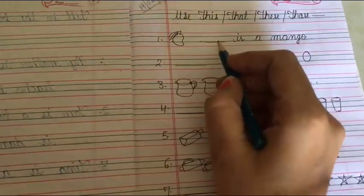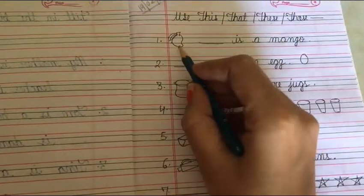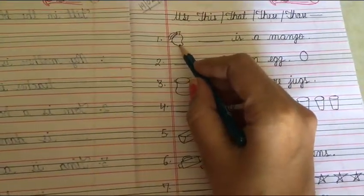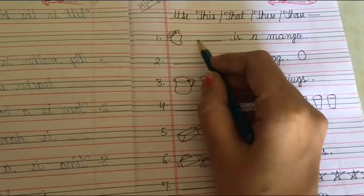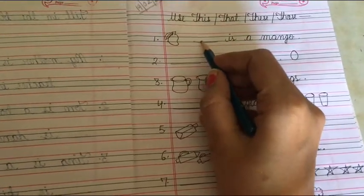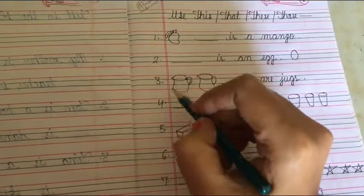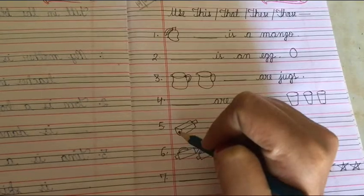First one: blank is a mango. First, see the picture. The picture is on this side, which means the mango is near to us. You have to write this, that, these, or those. Now tell me, what will come in the blank?